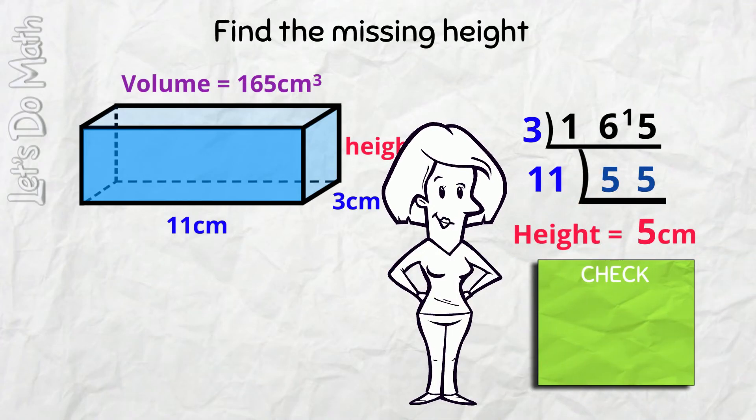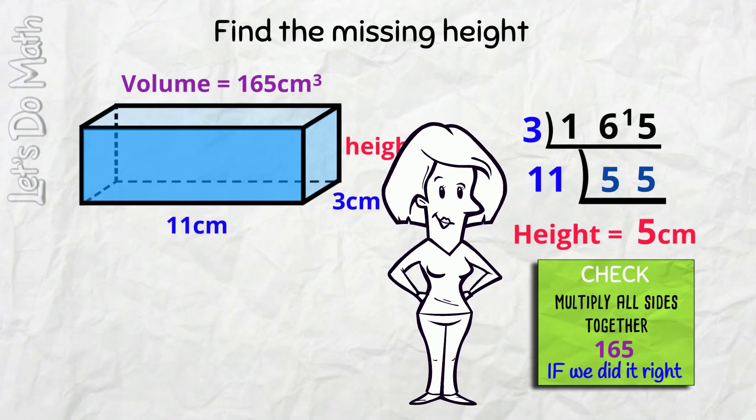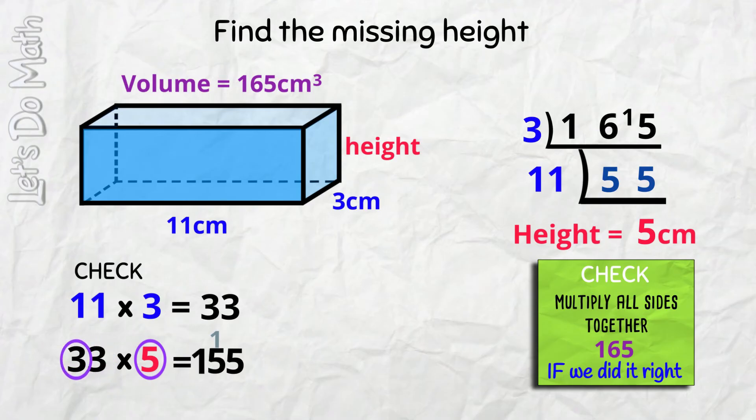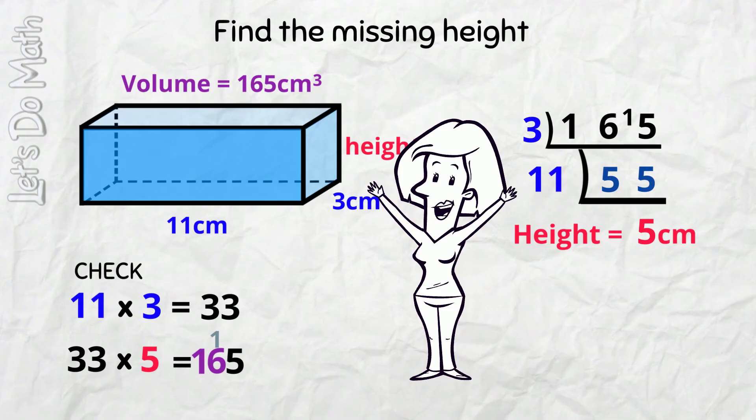And we can check our work by multiplying all the sides together to show the volume. We'll get 165 IF we did the math right! Let's check... 11, 3's of 33, and now multiply that by 5, 3 5's of 15, and 3 5's of 15 again PLUS this 1, 16... 165! Nice! How COOL is that?